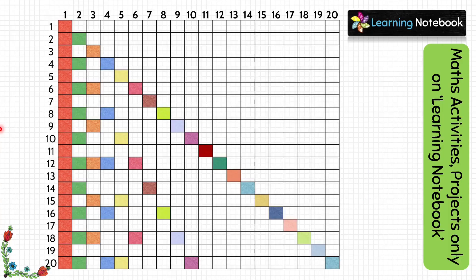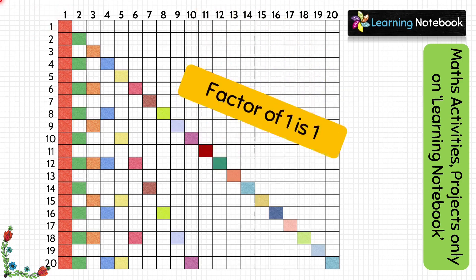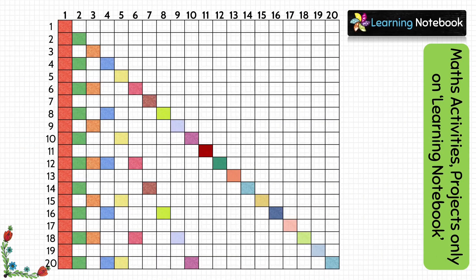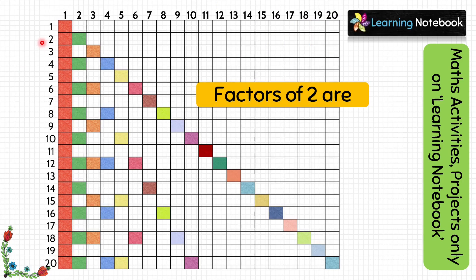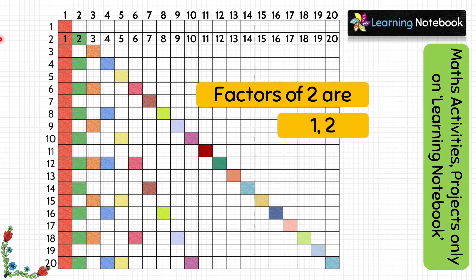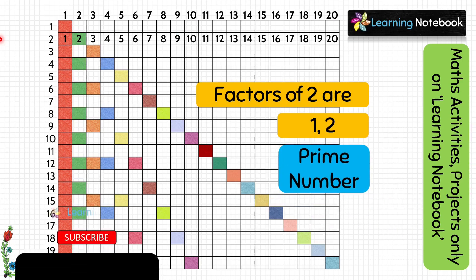Now let us find factors. First, let us find factors of 1 — for this we look at row 1. Only the box below 1 is colored, so the factor of 1 is 1. Next, for factors of 2, look at row 2. Boxes 1 and 2 are colored, so there are only 2 factors of number 2, which are 1 and 2. Since we have only 2 colored boxes, number 2 is also a prime number.